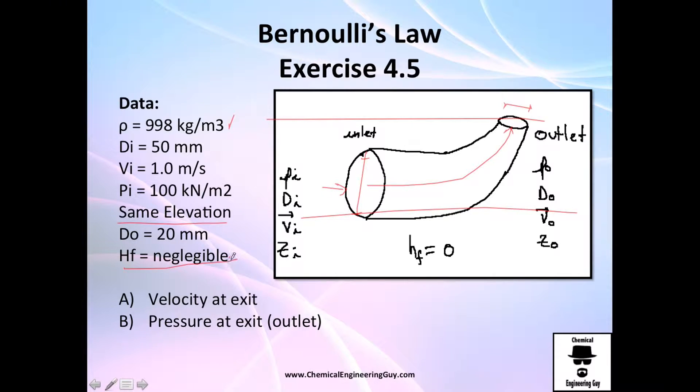The outside diameter, which is this one right here, is 20 millimeters. You can ignore all friction losses. We've got this pressure, this diameter, and this velocity. Even though we don't have the height, we don't need it because they will cancel each other. We don't know the velocity going out, the diameter, and the pressure going out.